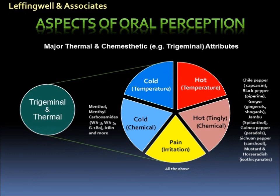This slide addresses the thermal and chemoesthetic, or trigeminal, effects that provide the feelings of hot, cold, and pain. Obviously there are thermal temperature effects such as hot and cold, but we also perceive the chemical hotness effects of things such as chili peppers, black pepper, hot mustard, horseradish, and ginger. The coldness of menthol and related cold compounds are encountered in mint-flavored gums, confections, and mouthwashes. And at too high levels of any of these attributes, we perceive pain or just perhaps a little bit of unpleasant irritation.